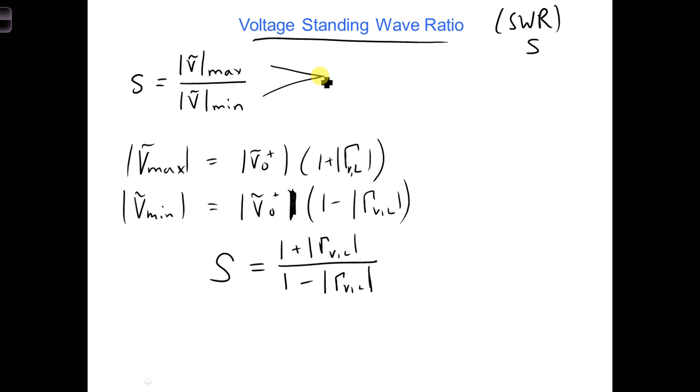The reflection coefficient is 0, and none of the power is reflected from the load. What's the maximum VSWR we can get?